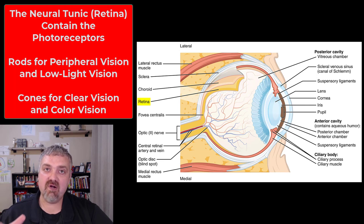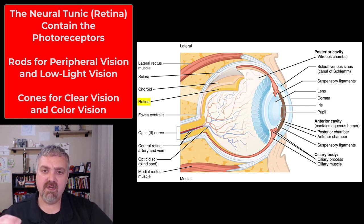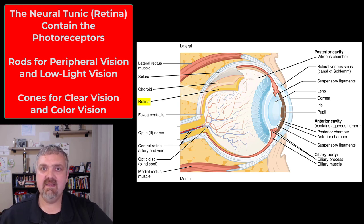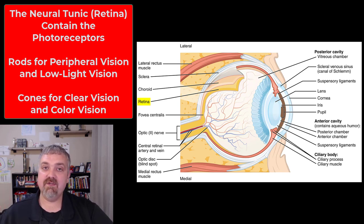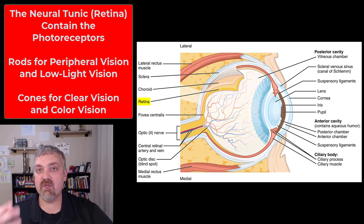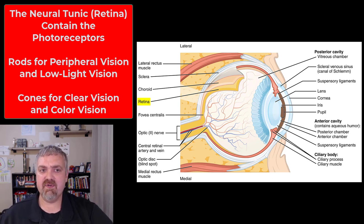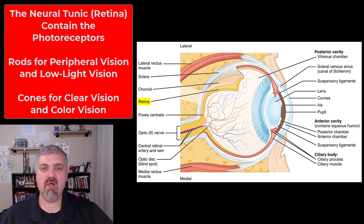Now we are at the actual functional part of the eye. Everything about the eye is designed to get the images we are seeing — the light entering the eye — to strike the photoreceptors of the retina. The inner neural tunic is your retina. It has support cells, an outer pigmented part, and an inner neural part. The key structures are the visual receptors: the photoreceptors, which are the rods and cones.